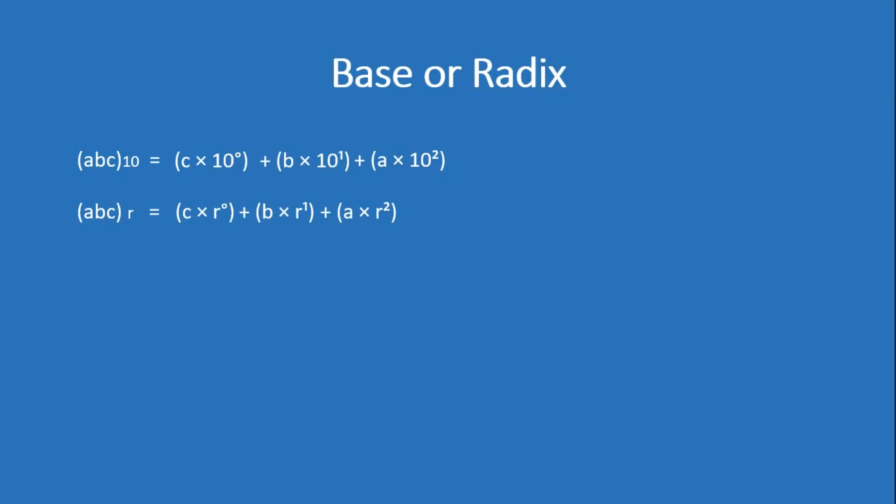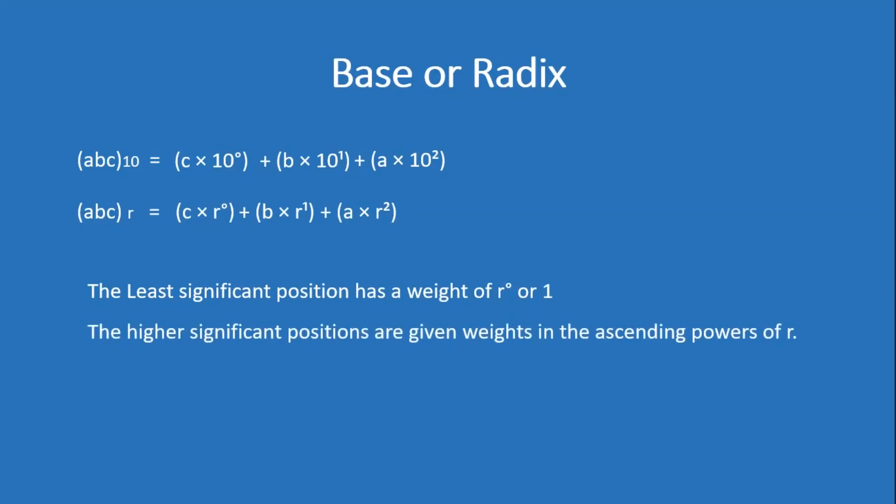So from this, we can say that for the base-R system, the least significant position — the position of C — has a weight of R to the power 0, or 1. And the higher significant positions are given weights in the ascending powers of R: B has a weight of R to the power 1, and A has a weight of R to the power 2.